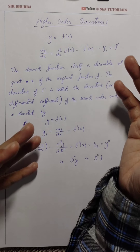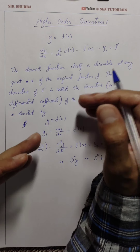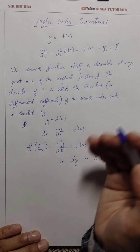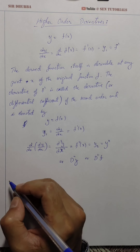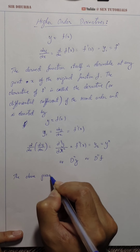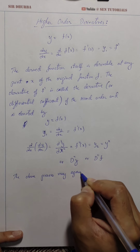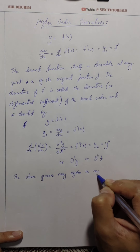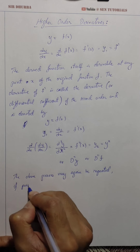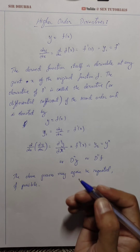The second-order derivative is also denoted as f''(x), y₂, y'', or d²y. All of these notations represent the second-order derivative. In very simple words, it means we apply differentiation twice: once the first-order differentiation of the original function is done, we apply differentiation once again. Of course, this only applies if the second-order derivative exists — it doesn't exist for all functions. The above process can be repeated further if possible.